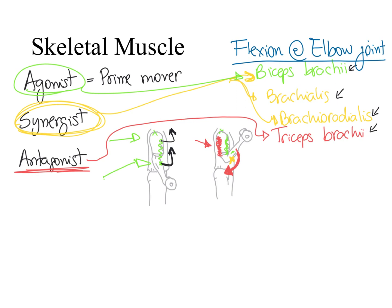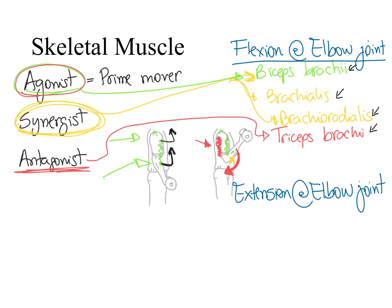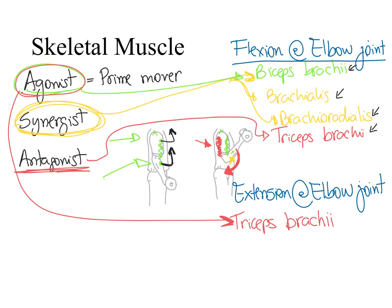Now, if you're talking about extension at the elbow joint, which muscle is considered the agonist? For extension at the elbow joint, the agonist is the triceps brachii muscle, because it is the prime mover causing extension. The antagonist — the muscle causing the opposite movement of extension — is the biceps brachii muscle. You always need to take into consideration the movement in question to correctly identify the agonist, antagonist, and synergist muscles.